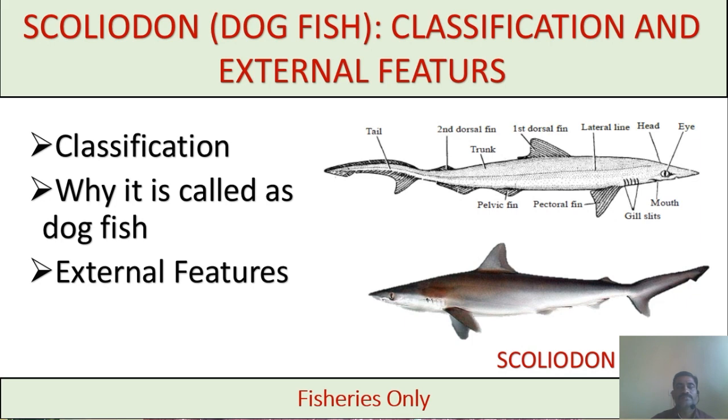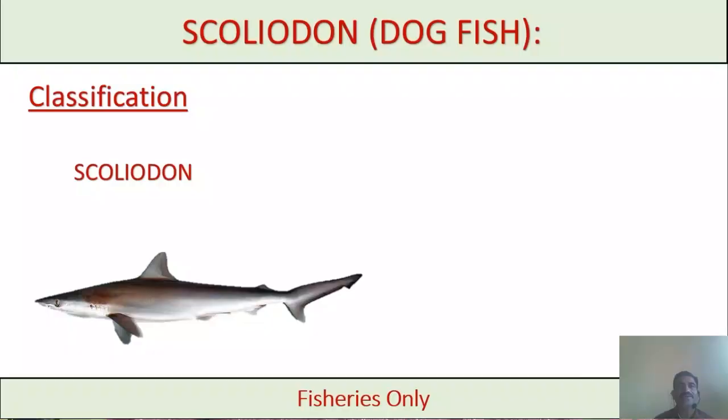It is also called a dog shark. The species name is Scolidon laticaudus. Let's see the classification of the Scolidon.